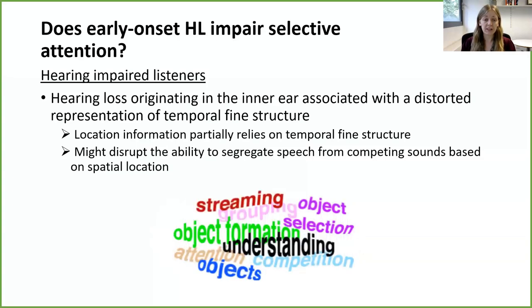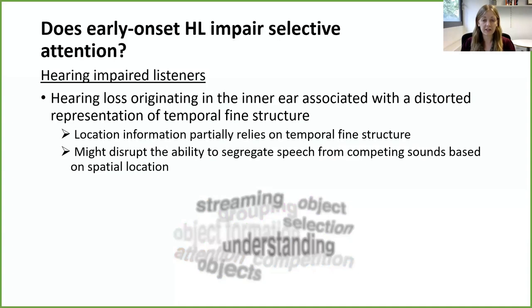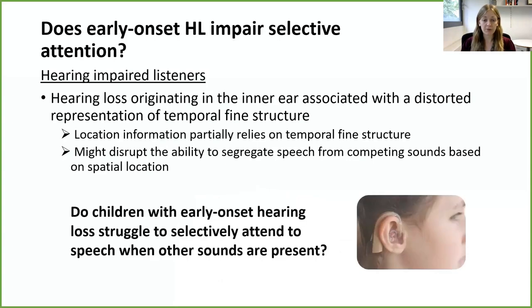As a visual analogy, consider someone trying to read words in an image where several words overlap — the fact that words are in different colours helps us read each word individually. But someone who's colour blind might not have access to these colour cues, so the words might blend into each other. We wondered whether something similar might happen when people with hearing loss hear speech when competing speech is present. Our research question was whether people with hearing loss struggle to selectively attend to speech when other sounds are present, and we focused on children aged 7 to 15 years who had early onset hearing loss.